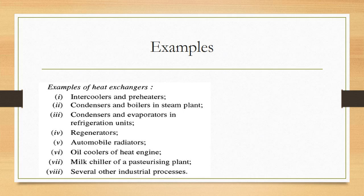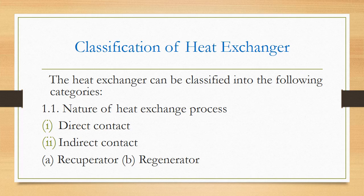Some examples of heat exchangers are: first, intercoolers and preheaters; second, condensers and boilers in steam plants; third, condensers and evaporators in refrigeration units; fourth, regenerators; fifth, automobile radiators; sixth, oil coolers; seventh, milk chillers of a pasteurizing plant; and eighth, several other industrial processes.